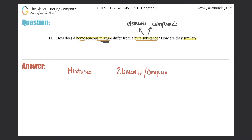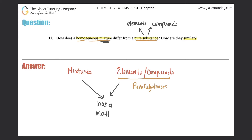Elements and compounds collectively make up pure substances. It does not matter if you're talking about mixtures or pure substances — each one has a mass and takes up space. For example, any symbol on the periodic table is an element, like fluorine (F) or chlorine (Cl). A combination of two or more elements forms a compound, like table salt, NaCl — sodium and chlorine combined. A mixture would be like salt water, when you take two compounds and push them together.